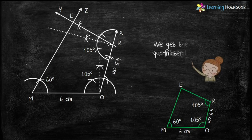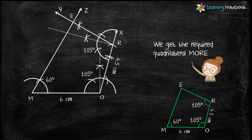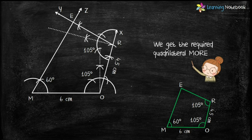Now our construction is complete and MORE is the required quadrilateral. This is how we construct a quadrilateral when its two adjacent sides and three angles are given to us.